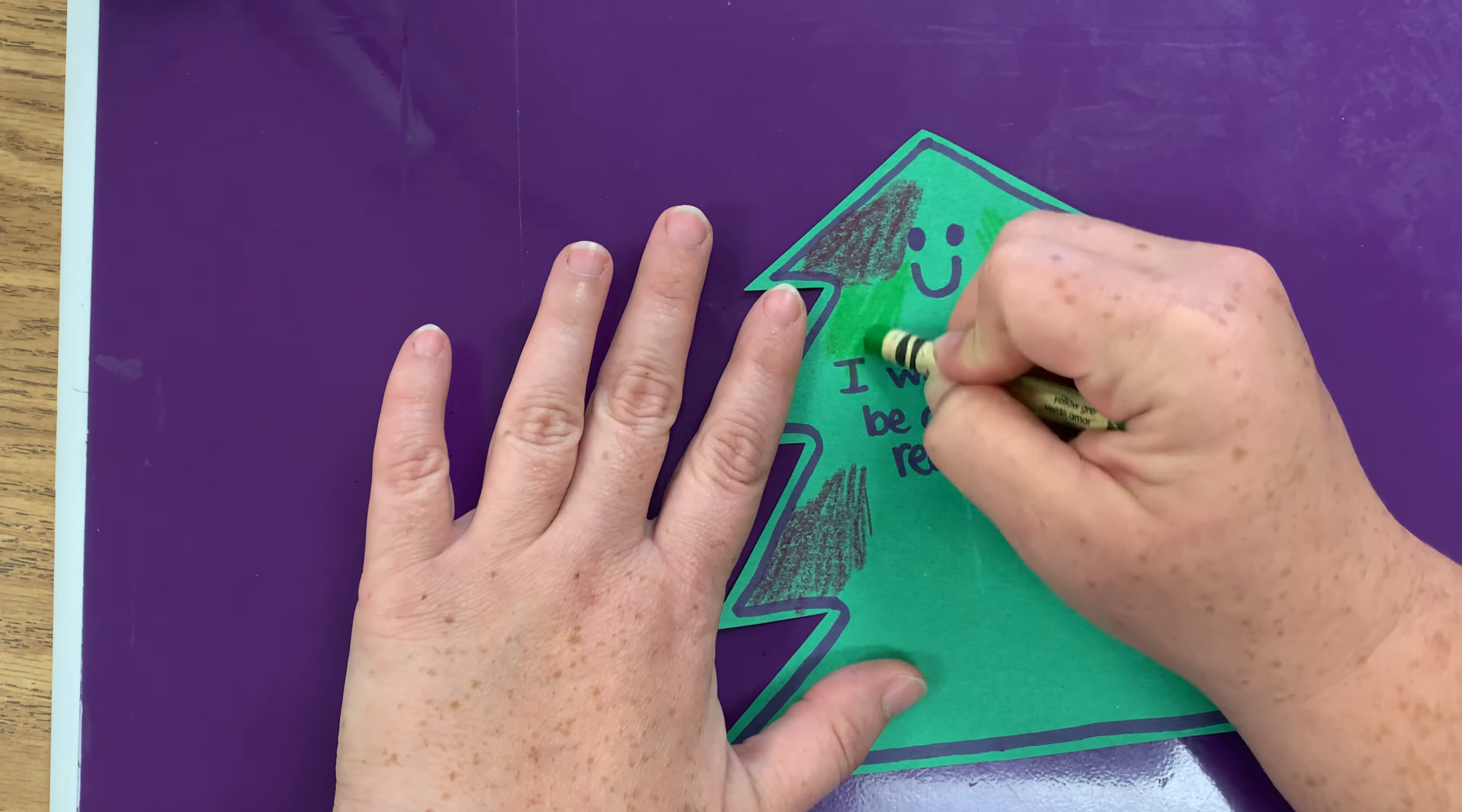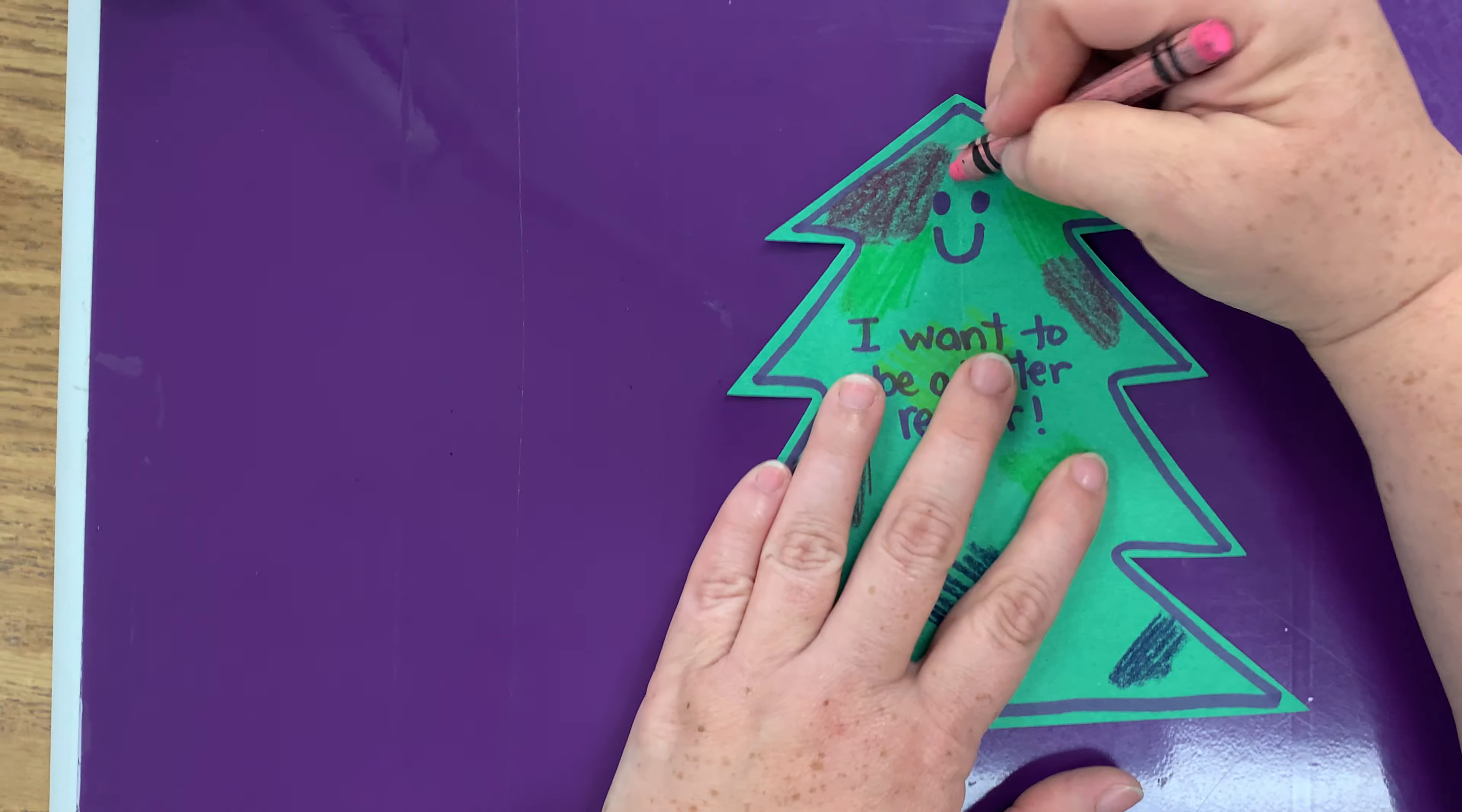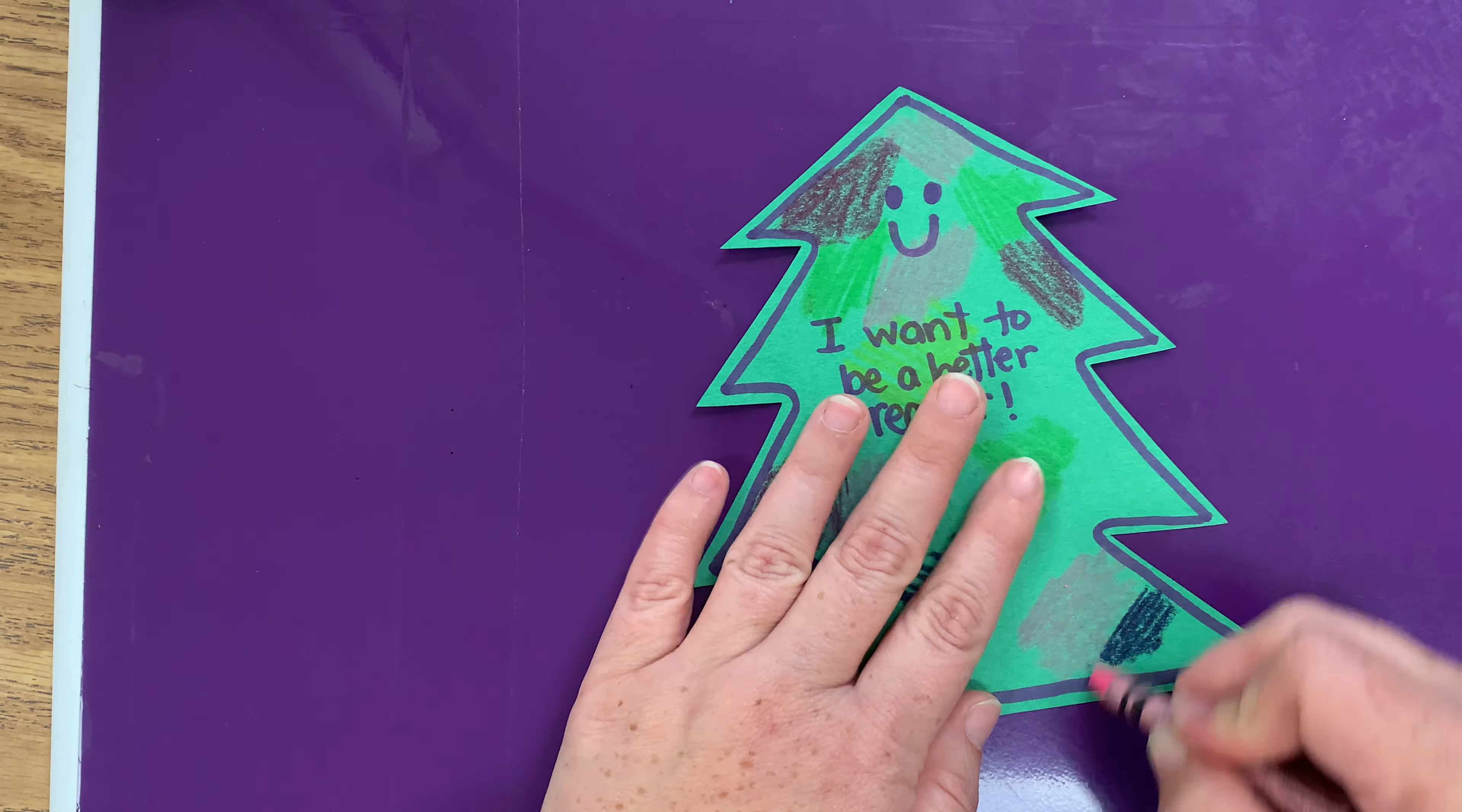But if you want to color over that area, I would use a lighter color, so maybe a yellow, so I can still see my writing underneath. I can't wait to see your goals for this year and how you want to grow just like these happy little trees.